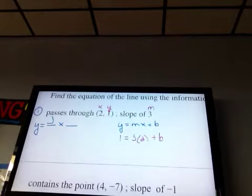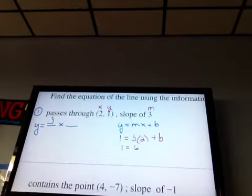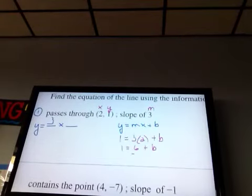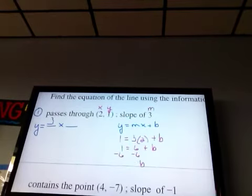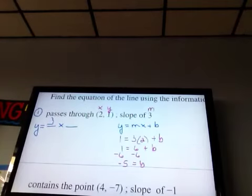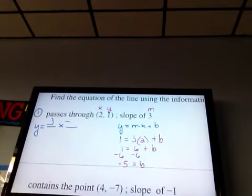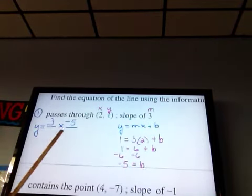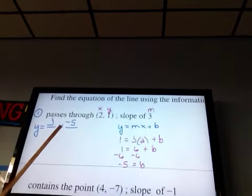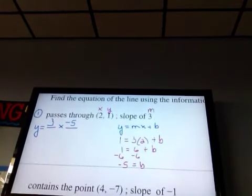And then you solve the equation for b. So 1 equals 6 plus b, 3 times 2. Subtract your 6. And b equals negative 5. And I go back to my little blank over there, and I fill in negative 5. So my answer is this. y equals 3x minus 5. Now, that's the equation of the line.